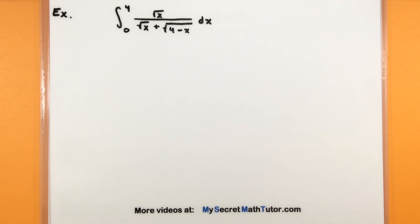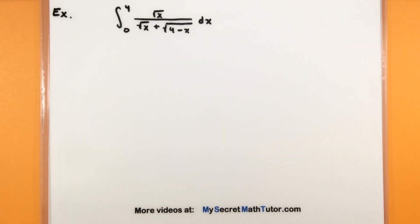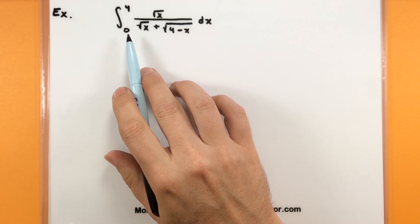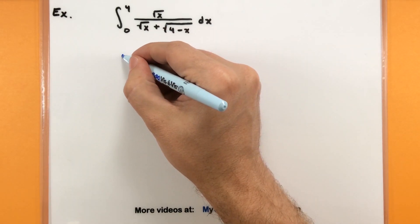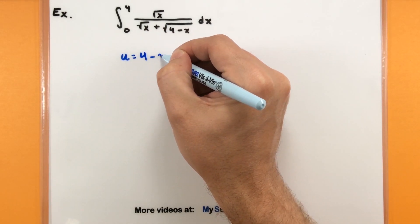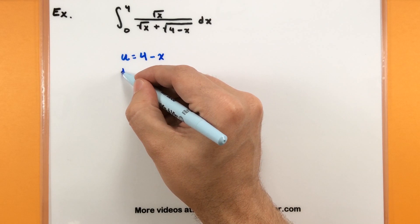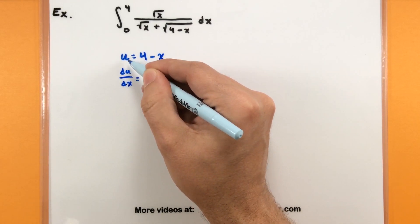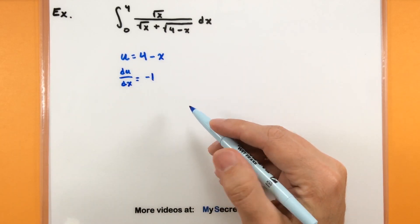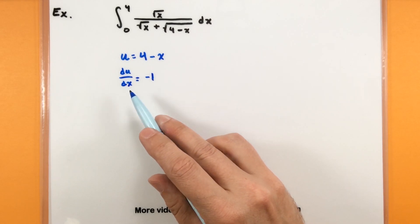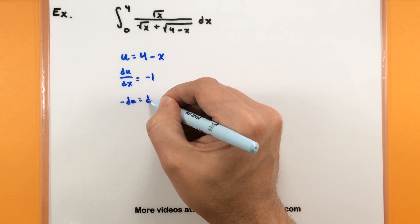For the first of these integrals, I'm looking at the integral from 0 to 4 of the square root of x all divided by the square root of x plus the square root of 4 minus x. It's not really clear where I should make a substitution. We're going to make the substitution u equals 4 minus x. We take the derivative of both sides — the derivative of negative x is just negative 1. Solving for dx gives us negative du equals dx.